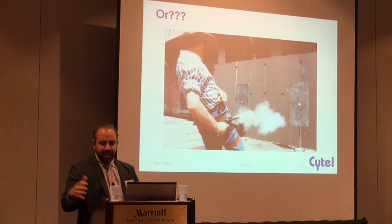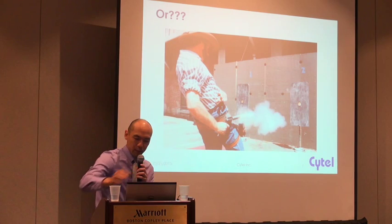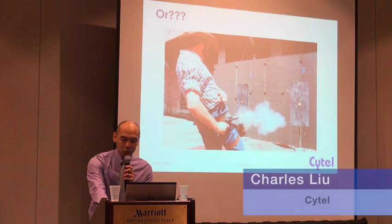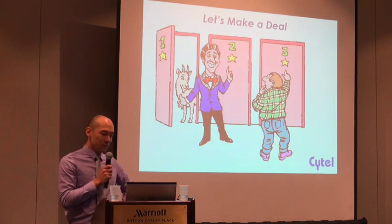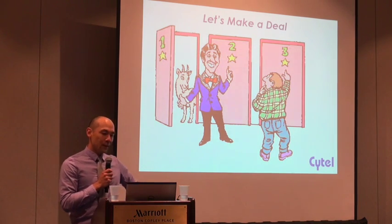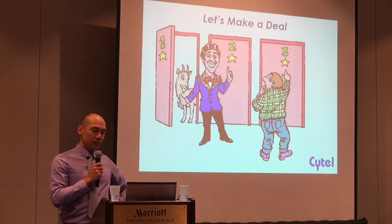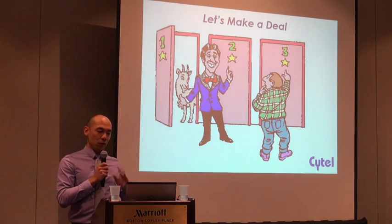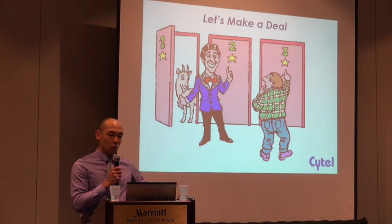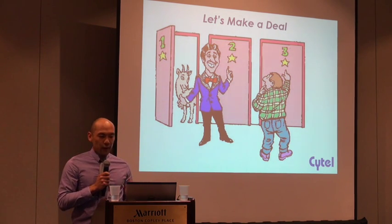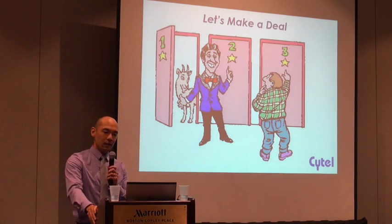I'm going to hand it over to Charles, and he's going to describe a different approach to planning your enrollment. I'm going to talk about how these simulation tools work, starting with a simple example to make things concrete. Suppose you're on a game show and your job is to win a car. There's a car hidden behind one of three closed doors, and behind the other two doors is a goat. A contestant has chosen door number three. Before the host opens door number three, he first opens door number one to reveal a goat.